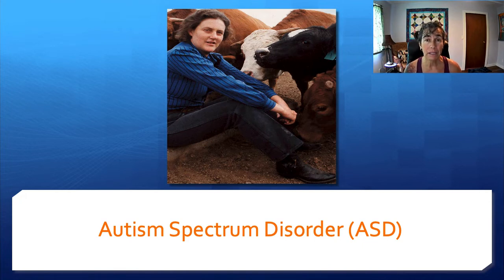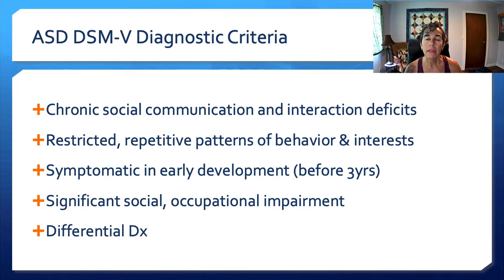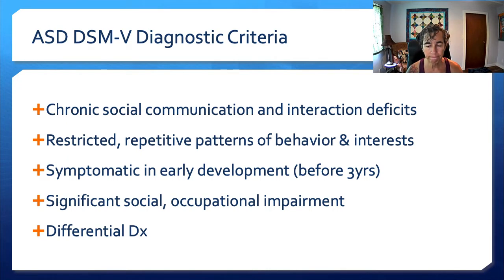We're in the DSM-5, the Diagnostic and Statistical Manual, Fifth Edition — all criteria will come from that source. With autism spectrum disorder, there are some key criteria: chronic social communication and interaction deficits, restricted repetitive patterns of behavior and interests, ASD is symptomatic in early development before three years of age, and there's significant social and occupational impairment. We also have a differential diagnosis component to sort out what separates this from other disorders, since signs and symptoms can look similar.